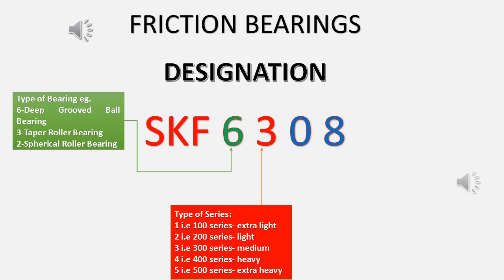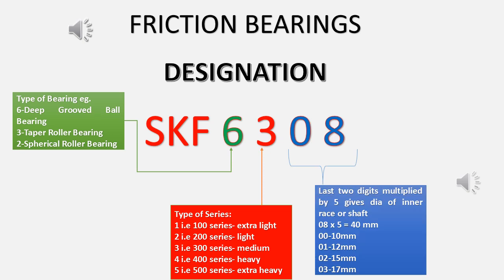Coming to the last two digits: the last two digits, when multiplied by 5, give the diameter of the inner race or the shaft. In this case, the last two digits are 08, which when multiplied by 5 gives 40 mm. This means that the bearing is suitable for a shaft of outer diameter 40 mm.